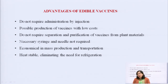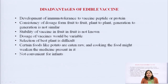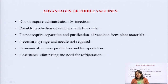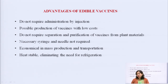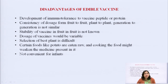What are the advantages of edible vaccines? It does not require administration by injection and no parenteral route is needed. Possible production of vaccines is at very low cost - it is just like cultivation, once you make a change in the plant you can directly cultivate it normally. It does not require separation and purification from the plant materials - you directly take the food material and give it to the patient like a food material itself. It does not require any syringe, needles, or sterilization. It is economical in mass production as well as transportation - you do not require deep freezers. They are heat stable and eliminate the need for refrigeration.